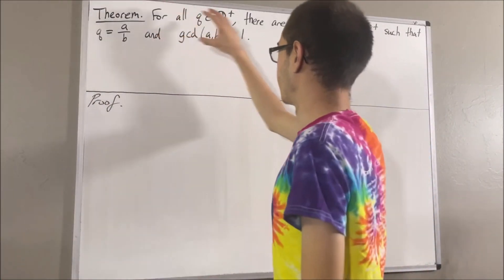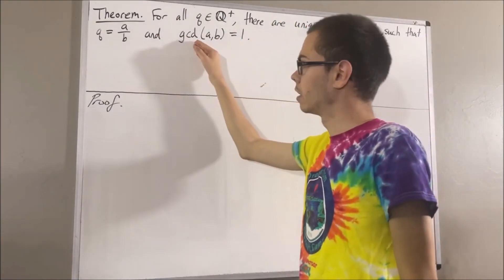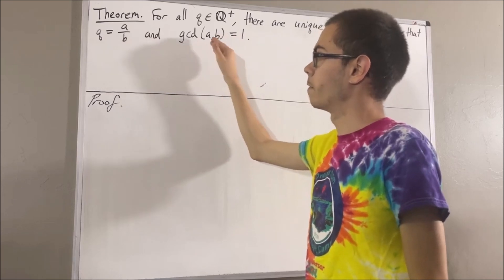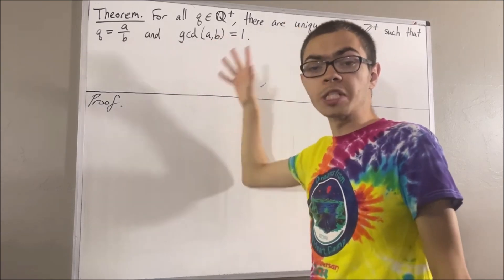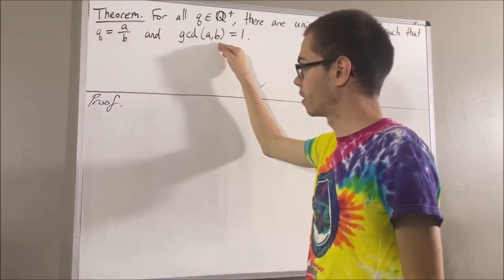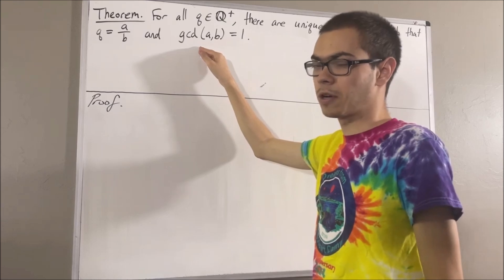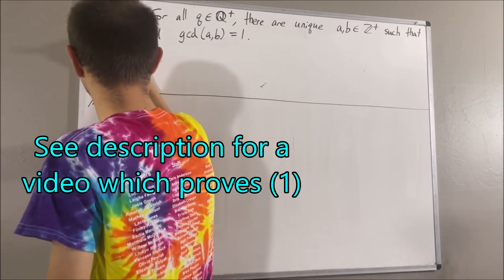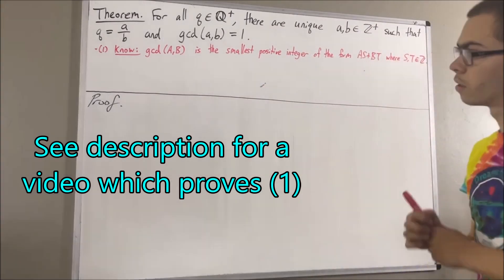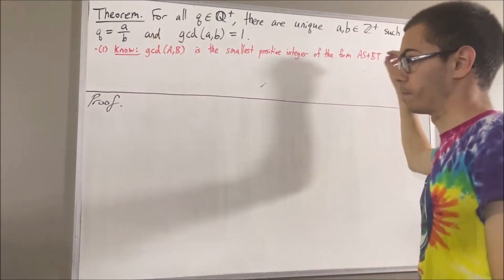In proving this theorem, we are going to use some facts regarding greatest common divisor. Let's remind ourselves that the greatest common divisor of A and B is the largest integer which is a divisor of both A and B. A property of the greatest common divisor is as follows, and here is a fact regarding greatest common divisors which follows from this one.